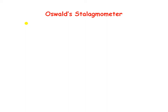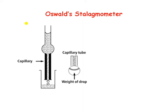We are determining the surface tension of the test liquid using this stalagmometer. It is a capillary-like structure with one bulb present in the middle. A marking above the bulb is known as mark A, and a marking below the bulb is known as mark B. Below the bulb it has a capillary-like structure where formation of drops occurs as we release the finger or remove the cork from the tip.